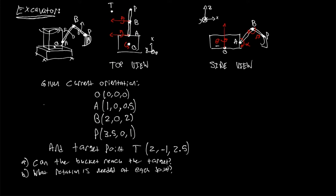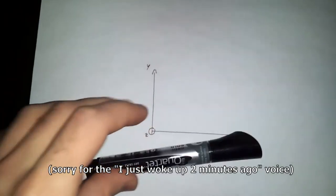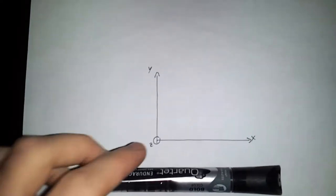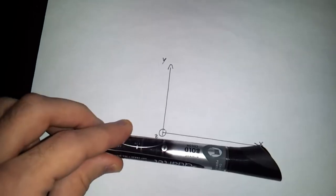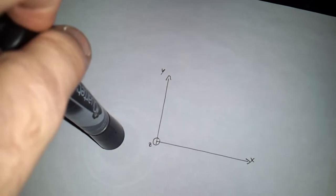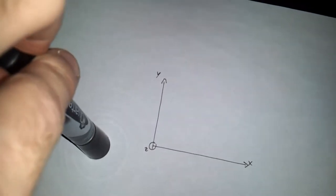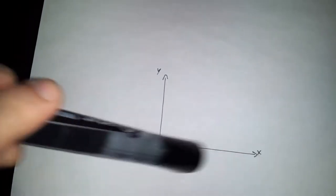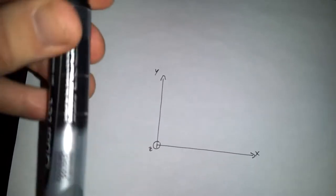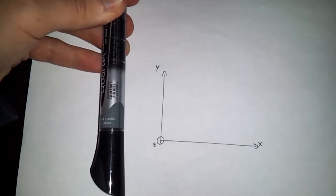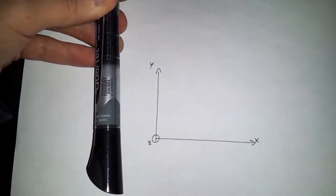Here's a little demonstration using a pen. We have coordinate axes X, Y, and Z, with Z coming up out of the page. If we take this pen and do a 90-degree rotation about X, then a 90-degree rotation about Y, the pen is now pointing into the page. If we change the order — 90 degrees about Y first, then 90 degrees about X — the pen is now pointing down. This highlights the importance of the order in which you apply the rotations.